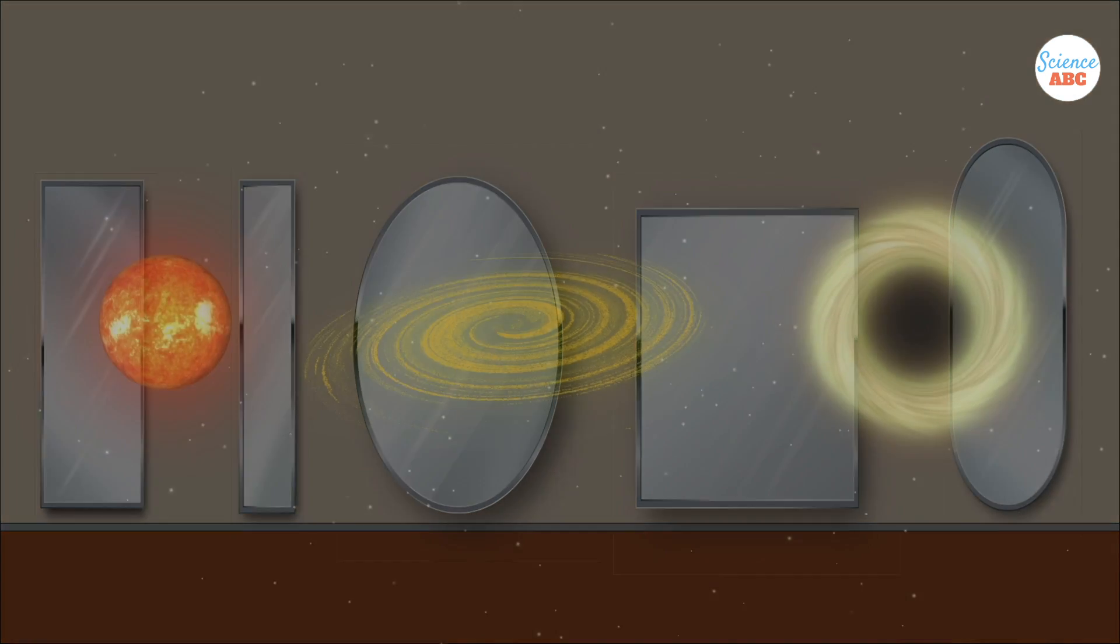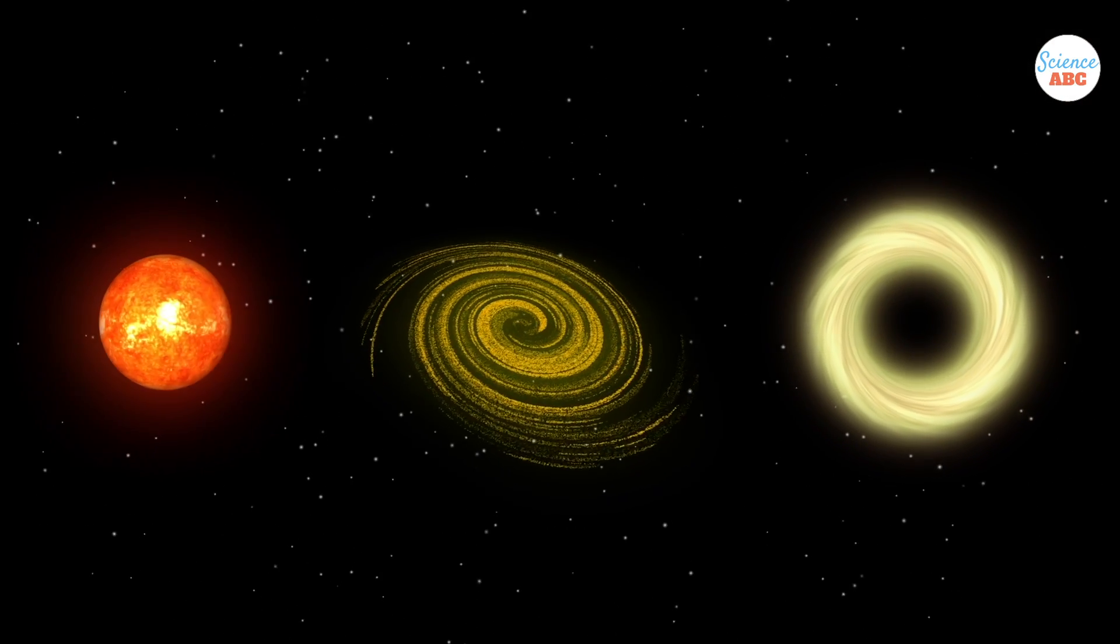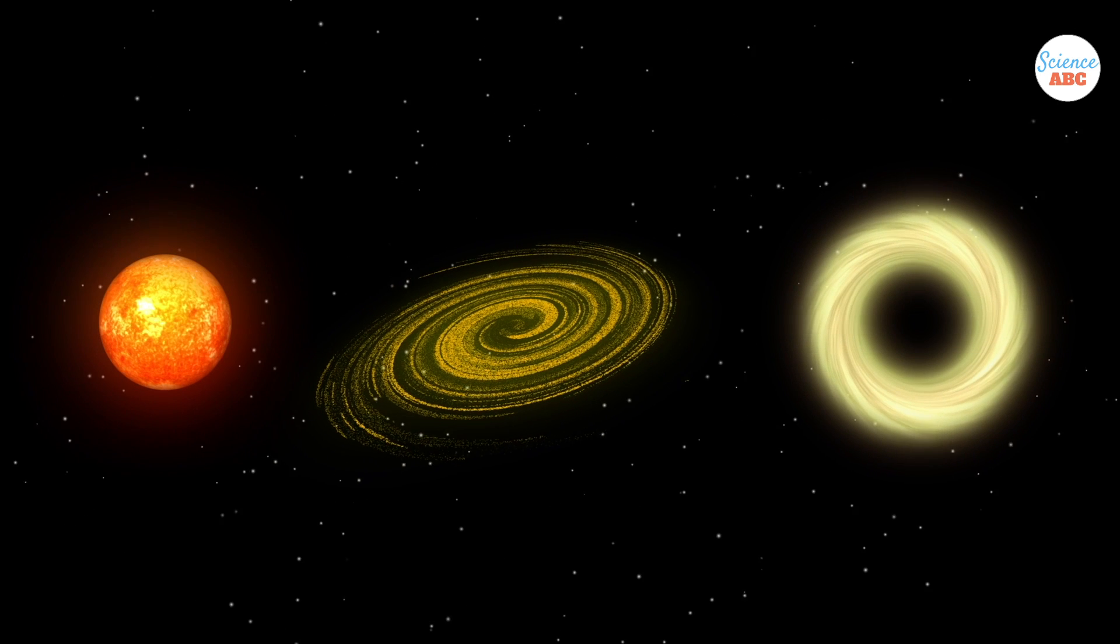It turns out that those massive celestial bodies like stars, galaxies, and black holes are essentially carnival mirrors, altering our view of the universe.